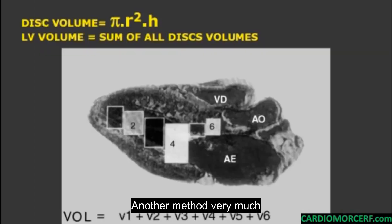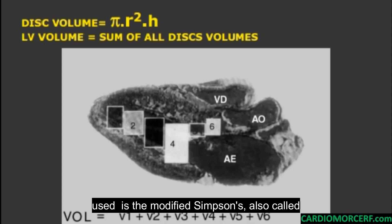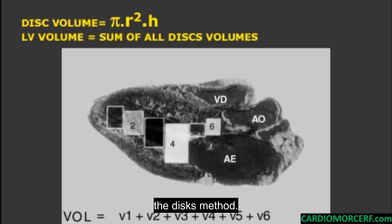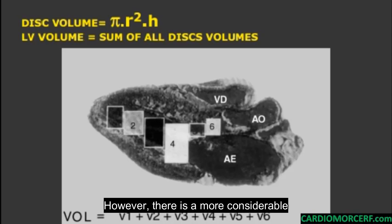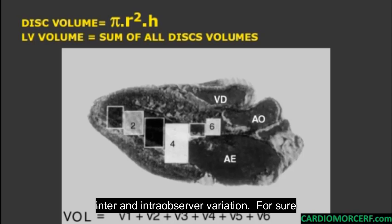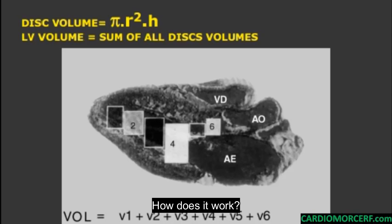Another method very much used is the modified Simpson's, also called the DISCS method. It may be the method with better concordance with values of ejection fraction by cardiac MRI. However, there is considerable difficulty in doing it and significant inter- and intra-observer variation — much higher than reported in the literature.